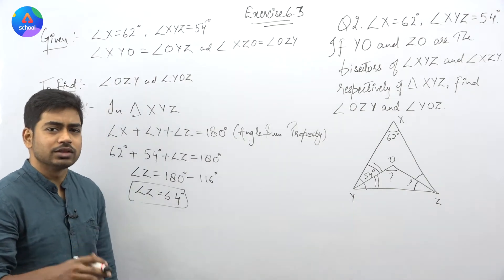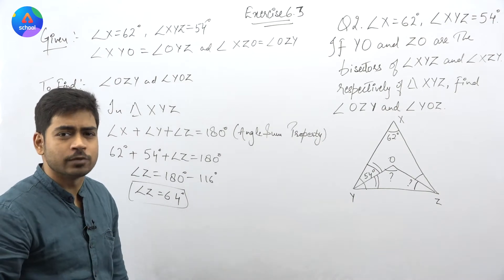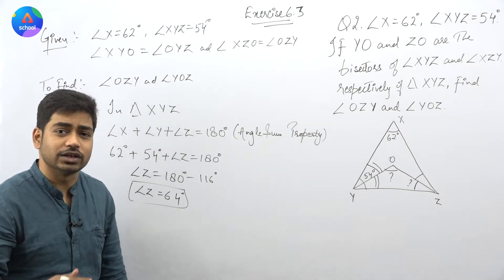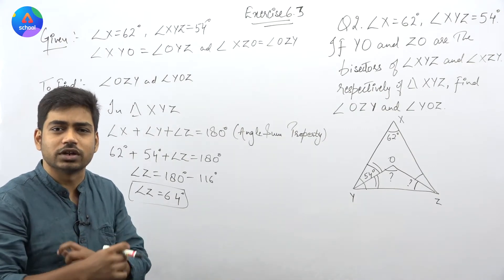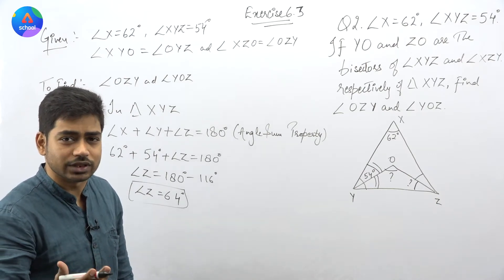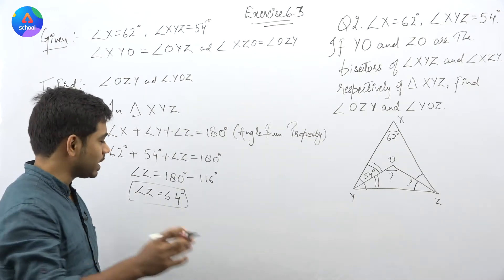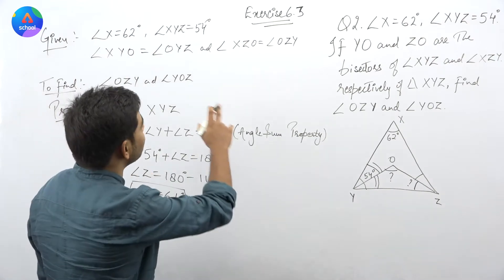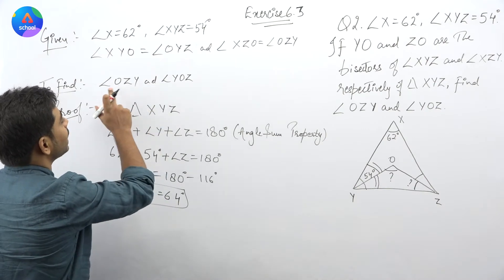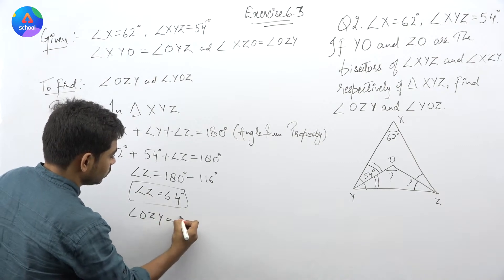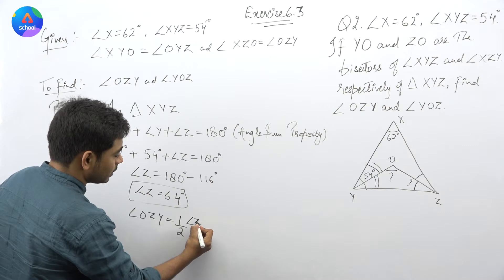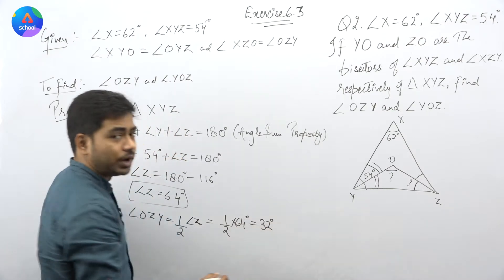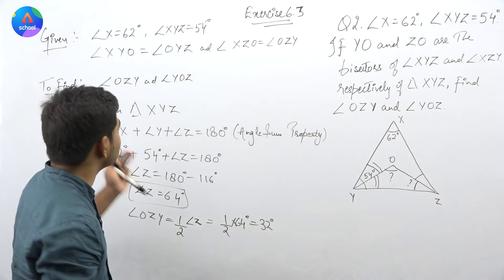कई बार calculations करने में दिक्कत होती है — एक split calculation method है जो मैं आपको जल्द करवाऊंगा, तो calculations में बिल्कुल मत घबराइएगा। अब angle OZY की बात करूं — यह half of angle Z होगा, बिल्कुल, क्योंकि ZO bisector है angle Z का। तो यह हो जाएगा half of 64 degree, यानि कि इसकी value आ जाएगी 32 degree।